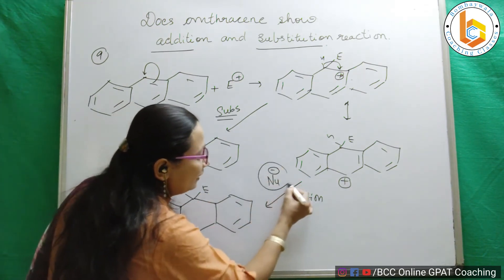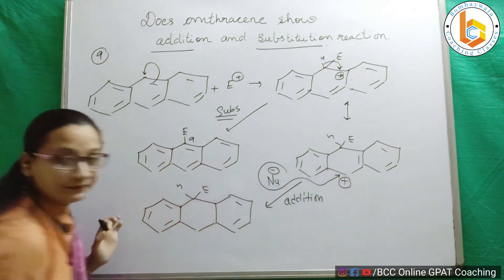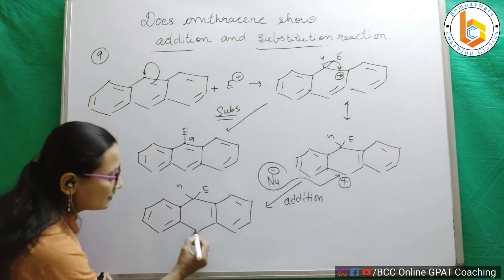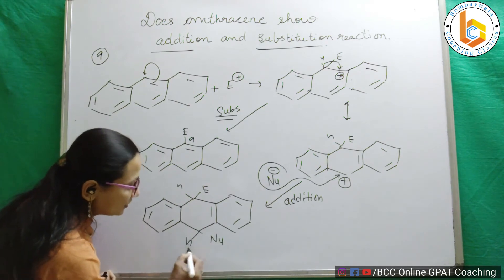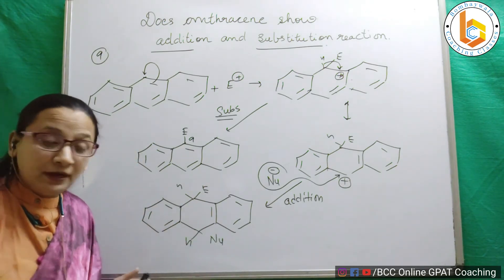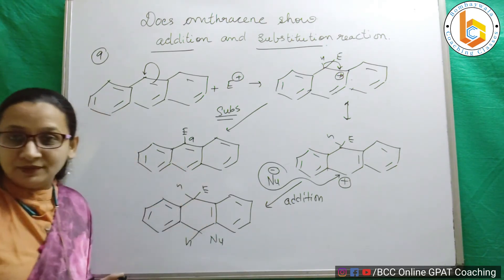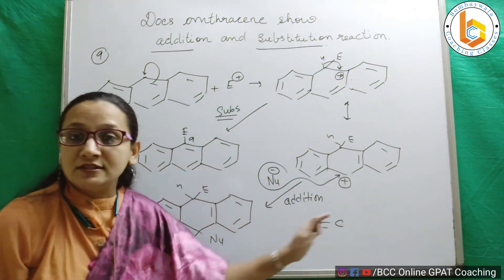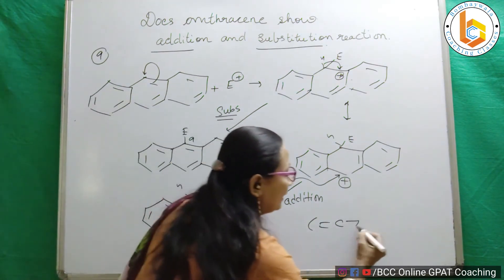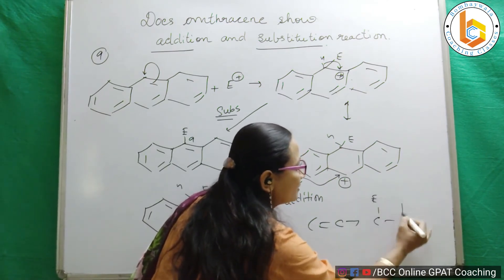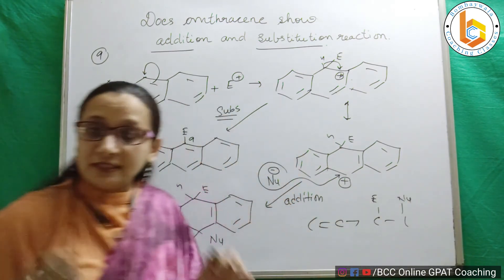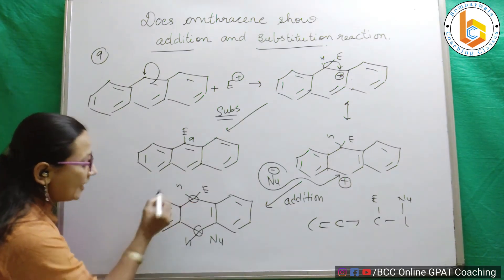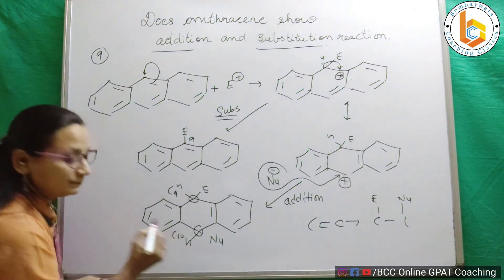What will happen? This nucleophile will go and attach here. There is a proton there, this double bond as it is — nucleophile and H are there. This is nothing but an addition reaction. We know that this is addition reaction across this double bond — one side electrophile comes and the other side nucleophile comes. The same way, this is addition reaction across C9 and C10 position.